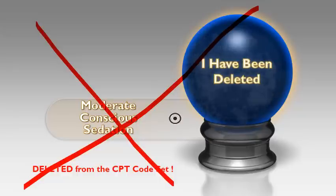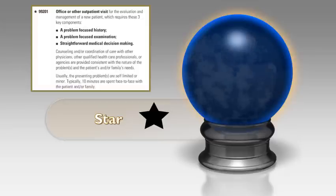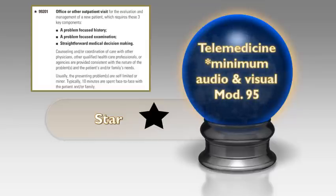Next: a small black star is used for telemedicine. It is used when a doctor is performing services requiring a minimum of audio and visual equipment — the doctor must be able to hear and see the patient. When this applies, modifier 95 needs to be appended. This is new for 2017.